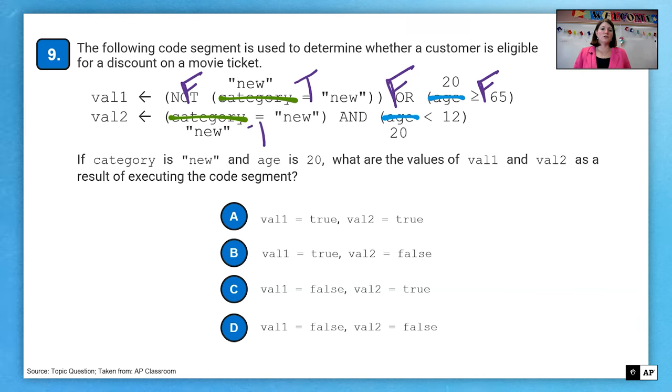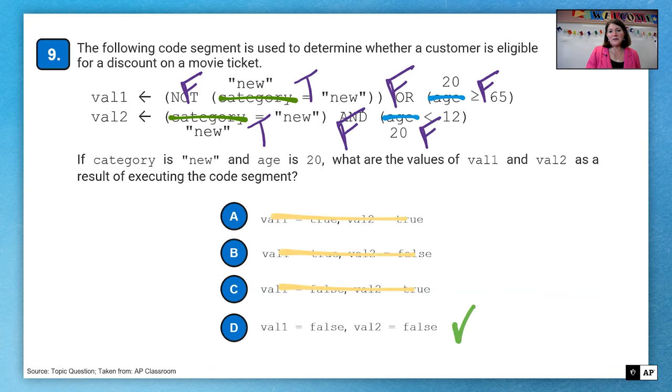So next one, new or new is true. New equals new is true. And then 20 is not less than 12. So that's false. So true and false results in false. So that means our answer is both of them are false or D.